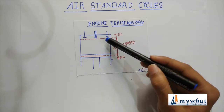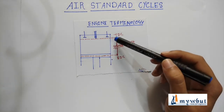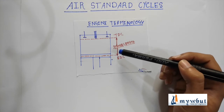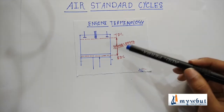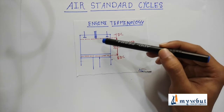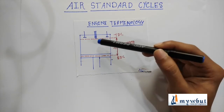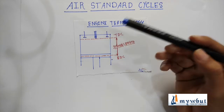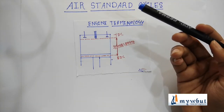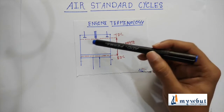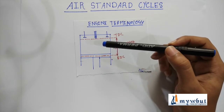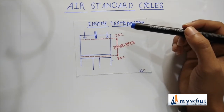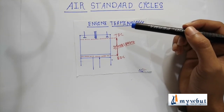If we calculate the volume between the TDC and the BDC, that volume is known as the stroke volume. You have already heard of 125cc or 200cc bikes and automobiles — this stroke volume is measured in CC, where CC means cubic centimeter.